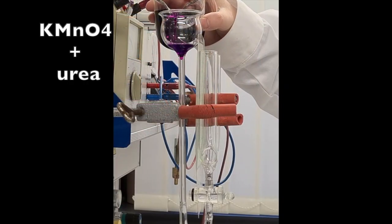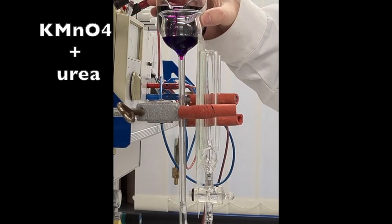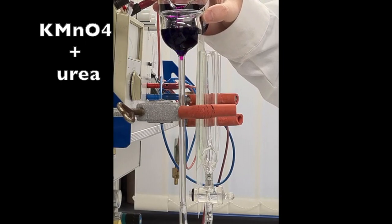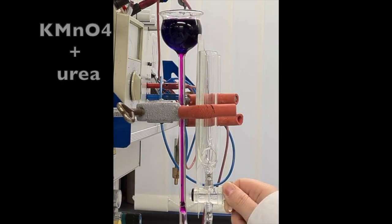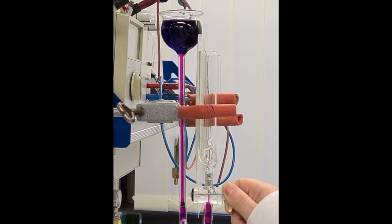Potassium permanganate solution, in which 80g of urea per liter are dissolved, is poured into this funnel with the stopcock closed. The stopcock is opened until the bore of the stopcock is filled with the purple solution. Avoid air bubbles.